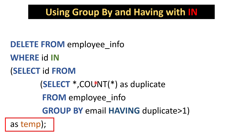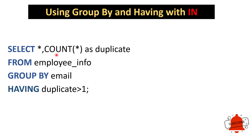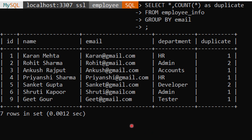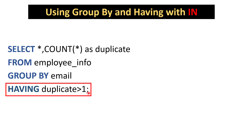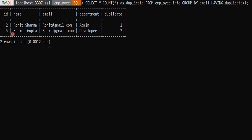The innermost query is: SELECT *, COUNT(*) AS duplicate FROM employee_info GROUP BY email HAVING duplicate > 1. Here 'duplicate' is a temporary alias for COUNT(*). When we execute up to GROUP BY email, we get output where the duplicate column value for Rohit and Sanket is 2, meaning these are duplicate records. The HAVING clause then filters to return only records where the duplicate count is greater than 1.